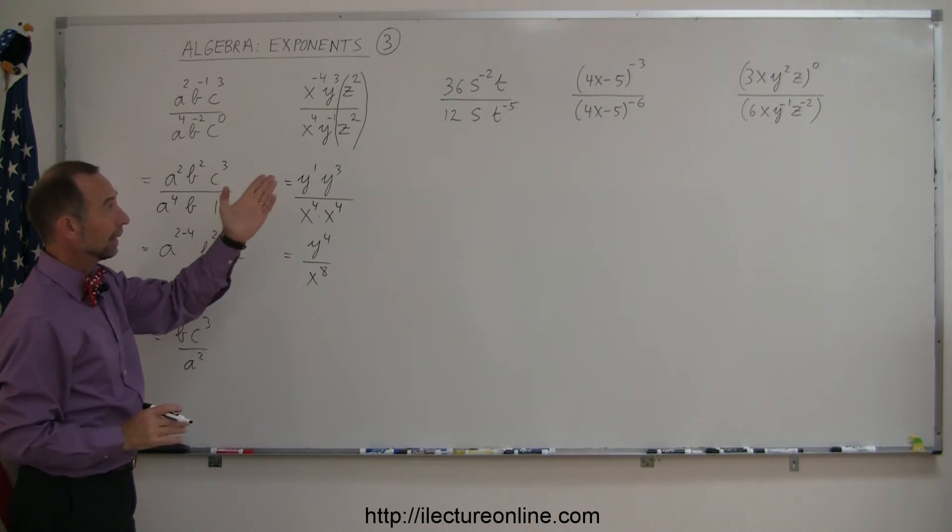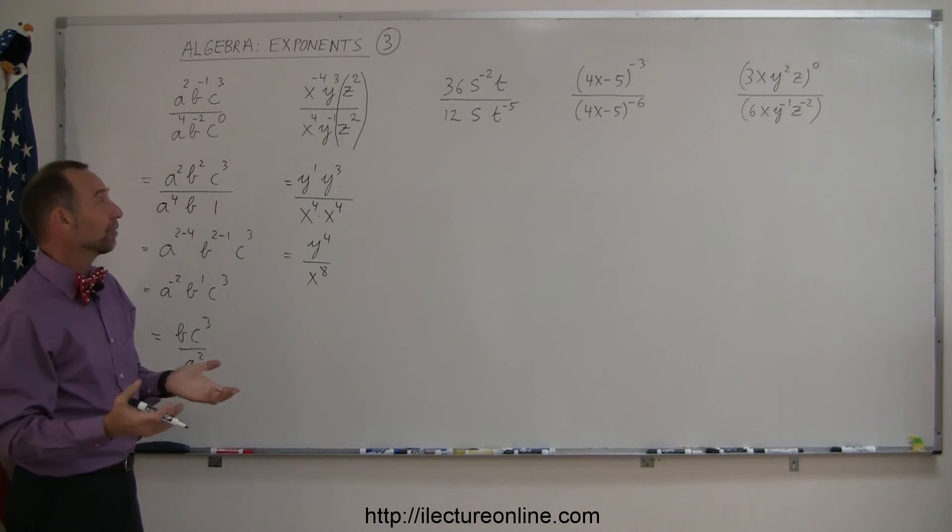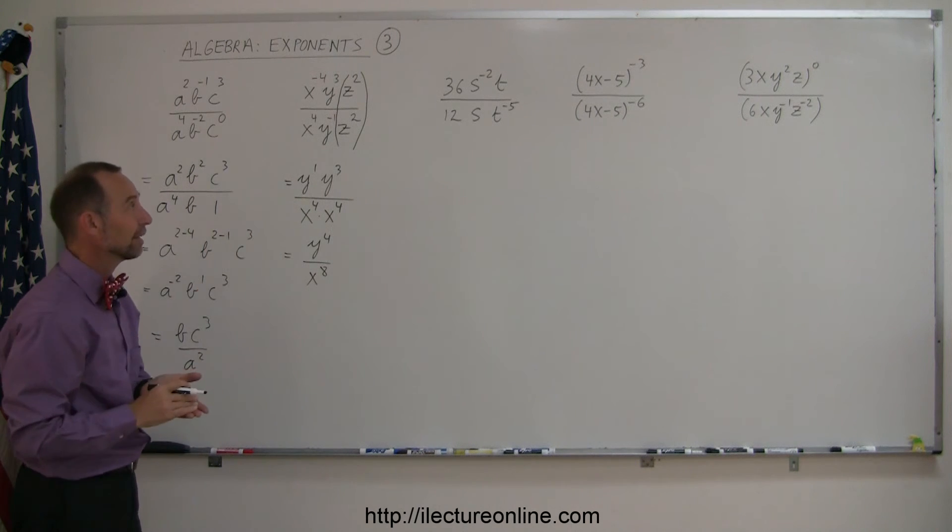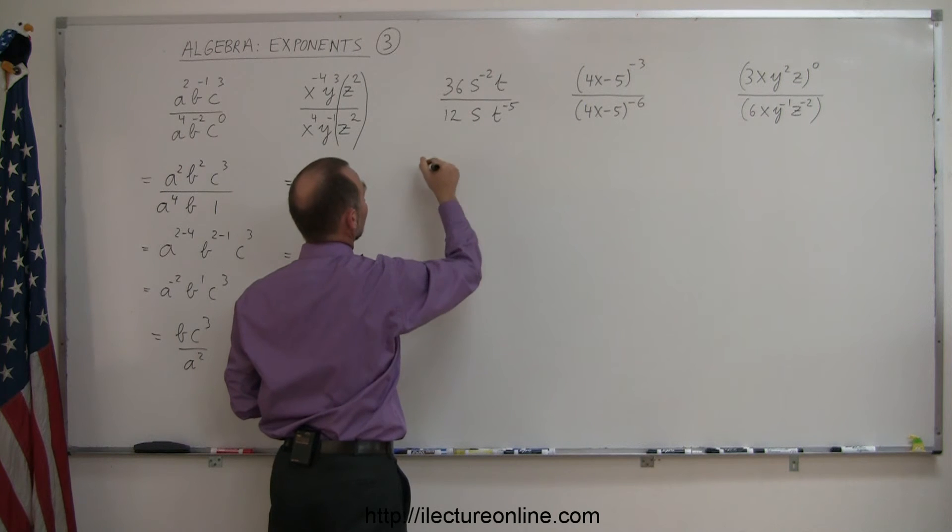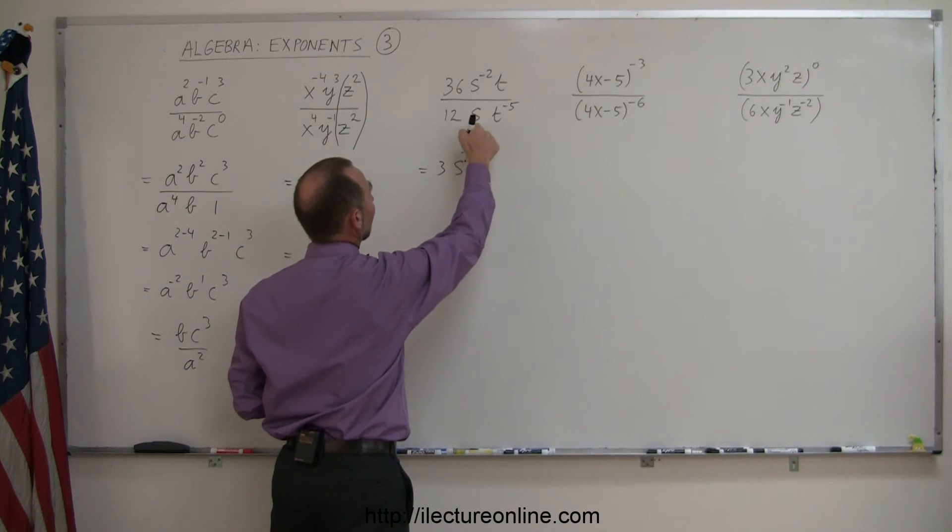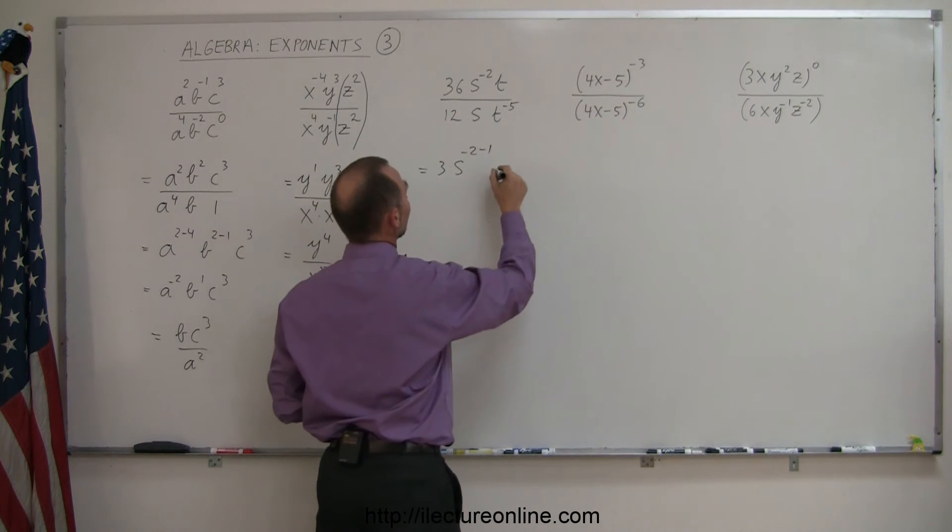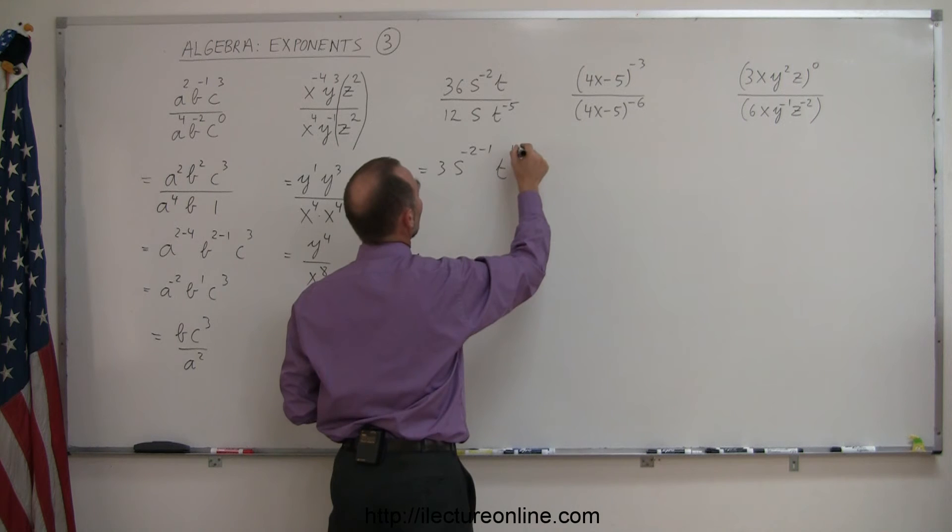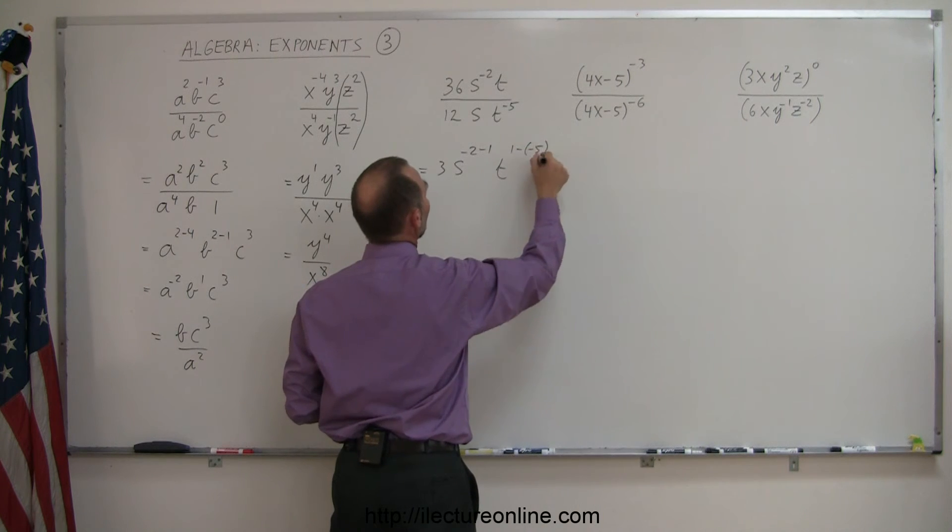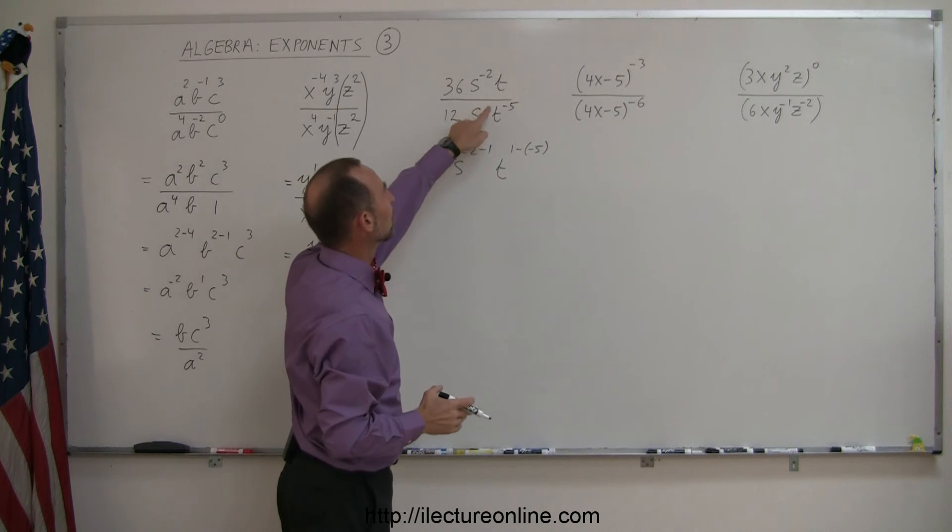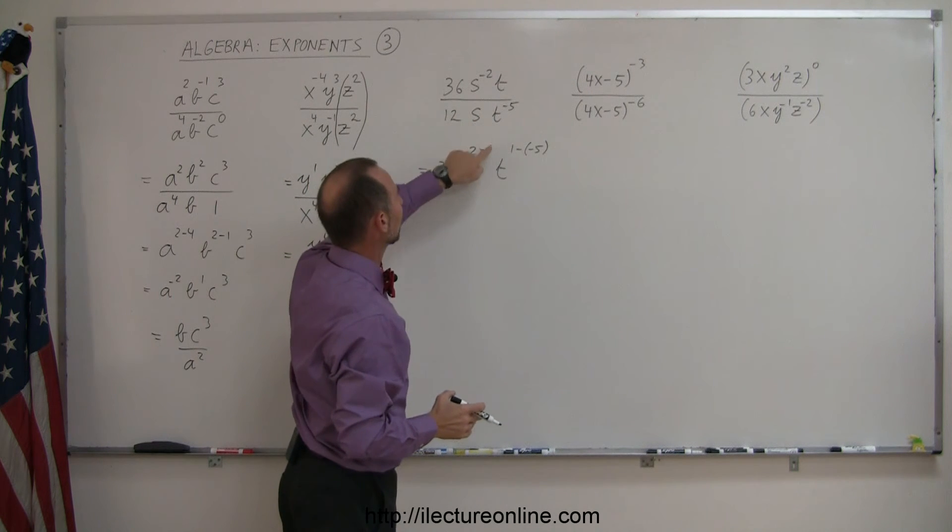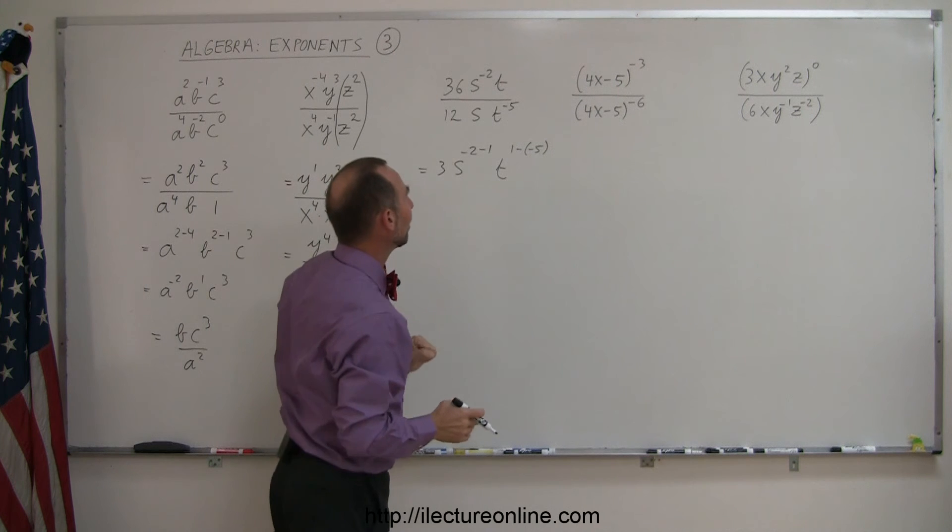All right, and I'm going to do that one just a little bit different to show you that you don't have to do it like this. You can do it in a different way as well. So first of all, I have 36 to the 5 by 12. That's equal to 3. Then I have s to the minus 2 power, and I divide it by s to the first power, so I subtract 1 from there. Then I have t to the 1 power minus a minus 5 power. So here I'm simply using the quotient rule. If it's in the denominator, I subtract the exponents. So I subtract the 1, and I subtract the negative 5.